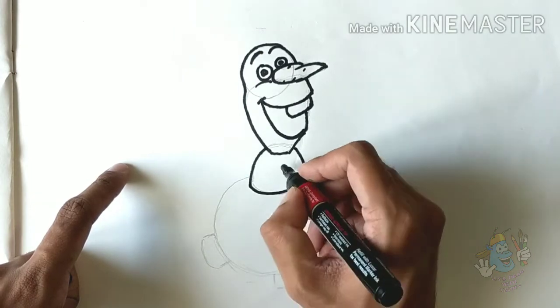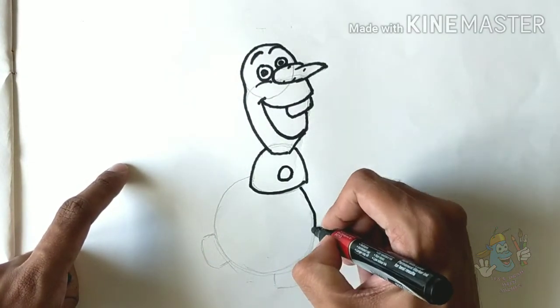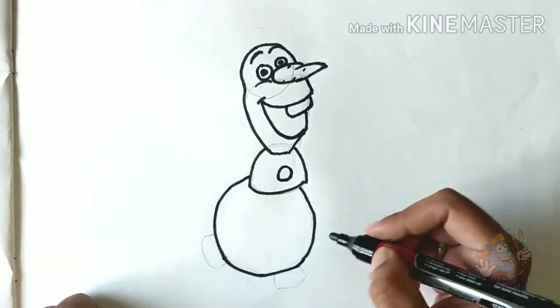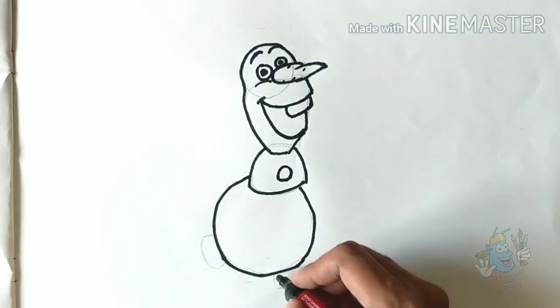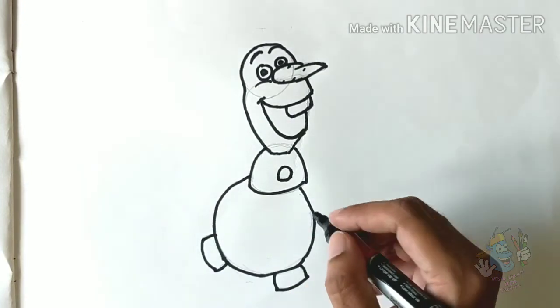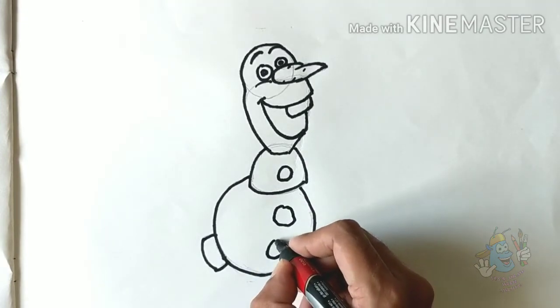Everything else is pretty simple. Just draw little circles for his buttons. Now these buttons are actually just rocks, so they don't need to be perfect circles. Just jiggle a little bit.